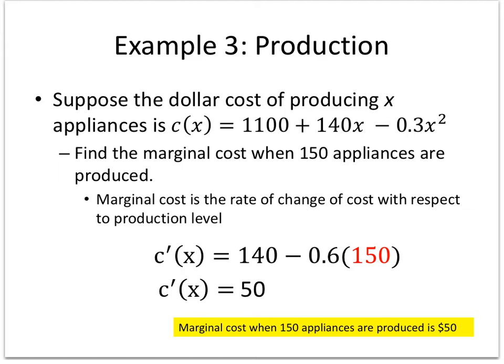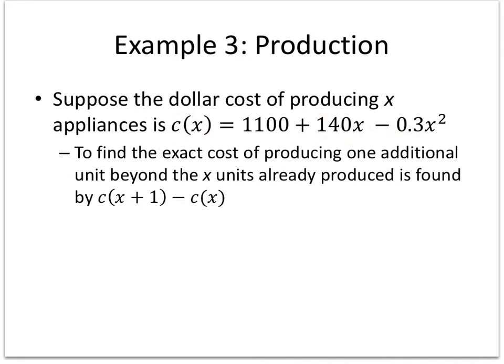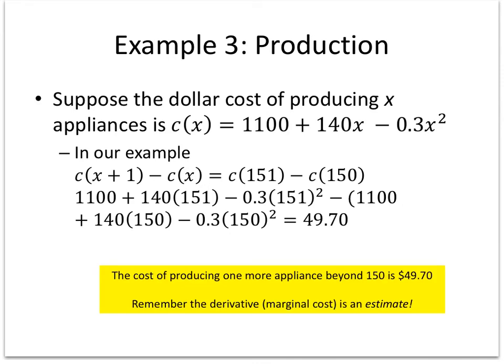To show that the marginal cost when 150 appliances are produced is approximately the cost of producing one more: use the cost equation to find C(151) minus C(150). You get approximately $49.70 — close to the $50. Remember that your derivative is an estimate, because you go back to the definition — the limit as h goes to 0. You're letting h get really, really close to 0, not equal to 0.